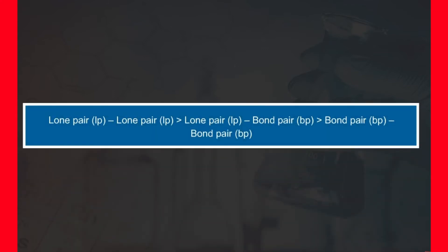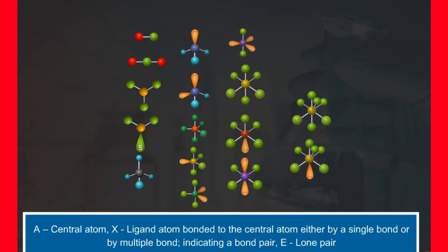The repulsive interaction of electron pairs decreases in a given order. The shape of a molecule and approximate bond angles can be predicted from the number and type of electron pairs in the valence shell of the central atom, as tabulated on the screen. The molecule is represented by AXE notation, where A is the central atom, X is the ligand atom bonded to the central atom by a single or multiple bond indicating a bond pair, and E is a lone pair. The sum of the number of ligand atoms X and lone pairs E is known as the steric number. Bond pairs are shown as green-colored thick lines, while lone pairs are shown as green-colored lobes.